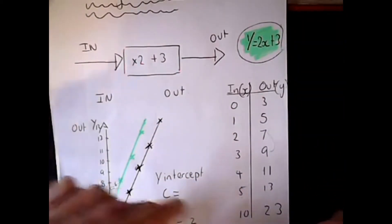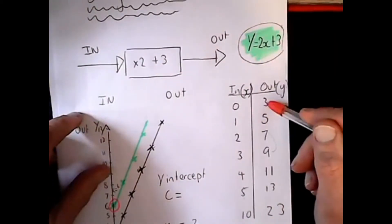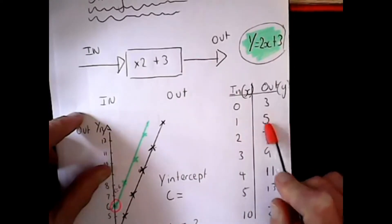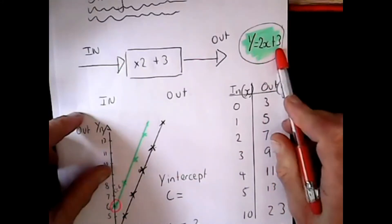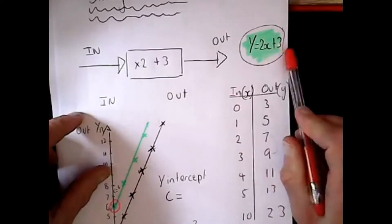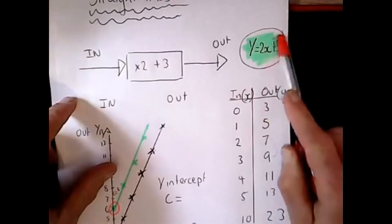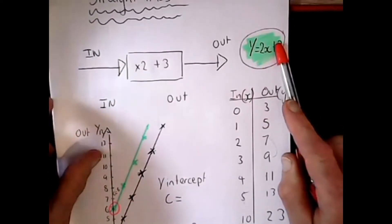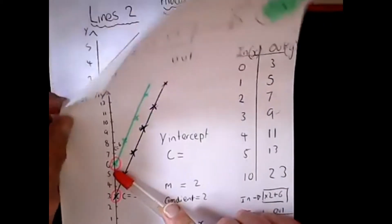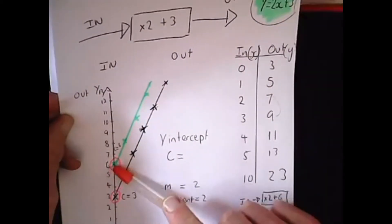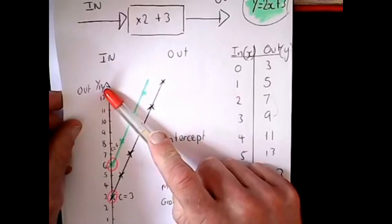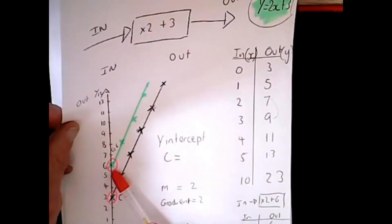The 2 times table goes up in 2's: once 2 is 2, two 2's are 4, three 2's are 6. But we need an adjustment, because although it's a 2 times table - take that first part: once 2 is 2, we've got 5. So we need to add on 3, which is where this 'add 3' comes in. This add-on number is special because that's where the line starts - that's where it crosses the y-axis. That number is very important and called the y-intercept.